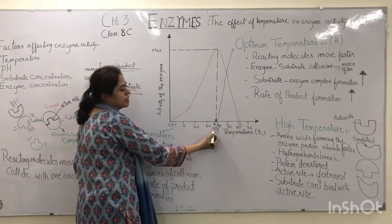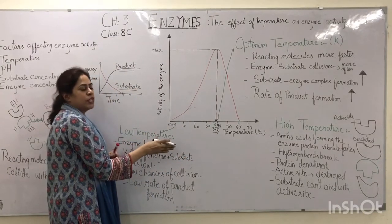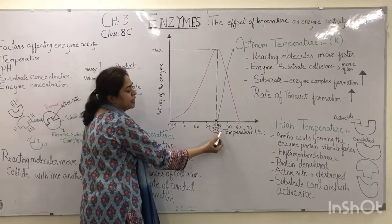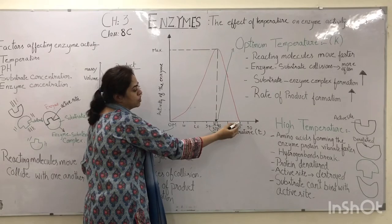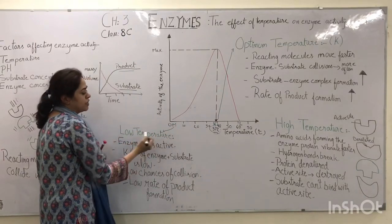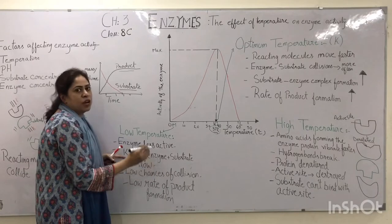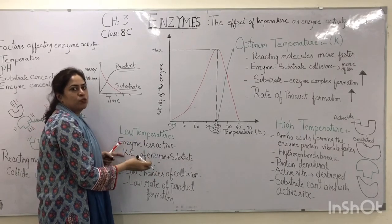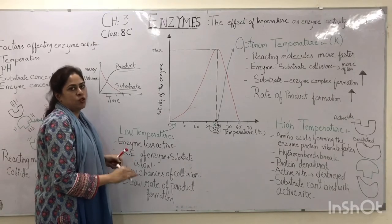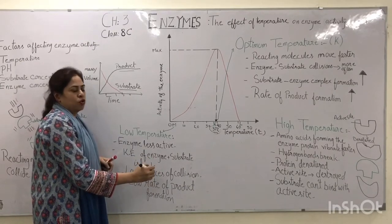The temperature where enzyme activity is at its maximum is 37 degrees centigrade. This means the enzyme in question is from the human body and the optimum temperature for this enzyme is 37 degrees centigrade. Beyond 40 degrees centigrade it will lose its ability to function, and beyond 60 degrees centigrade the enzyme will be denatured. At low temperatures, the enzyme is less active because the kinetic energy of the enzyme and substrate molecules is low, their vibrations are low, the chances of collision between them are low, and therefore the formation of the enzyme-substrate complex is low.